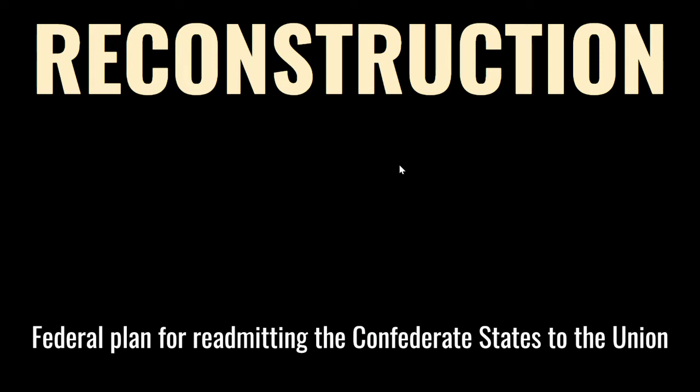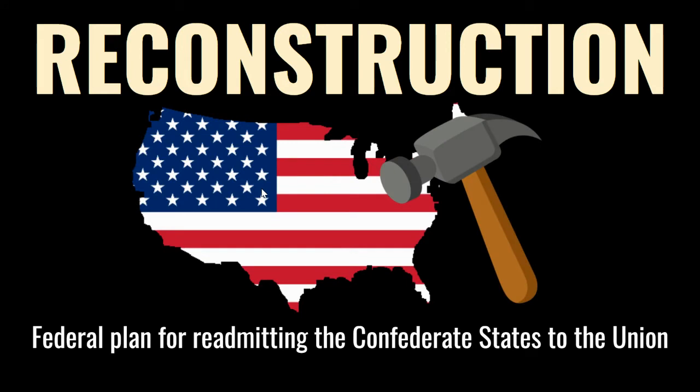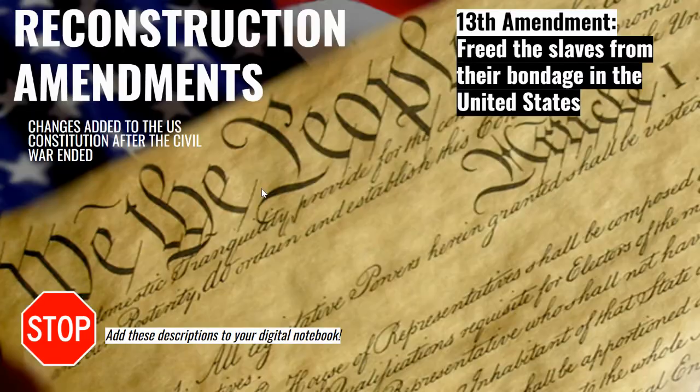Reconstruction was the federal plan for readmitting the Confederate States to the Union. To recap, last time we talked, the Confederacy had just surrendered to the Union after the fall of Richmond, which was the Confederate capital. The Confederates officially surrendered when Lee surrendered to Grant at Appomattox Courthouse, Virginia. Now the war is over, and the plan is to bring the South back into the Union as quickly and efficiently as possible and rebuild the South after all the damage from the war.